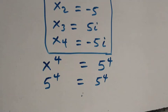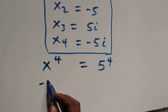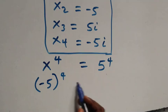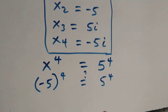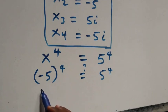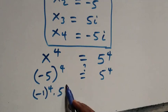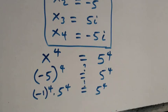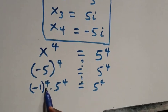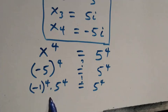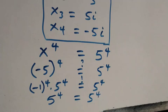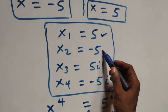Also for minus 5, when we substitute we have minus 5 raised to the power of 4 is equal to 5 raised to the power of 4. The power of 4 affects minus, so we have minus 1 raised to the power of 4, then times 5 raised to the power of 4, equal to 5 raised to the power of 4. When we raise minus 1 to the power of 4, it turns to plus, since minus 1 multiplied 4 times gives plus 1. So 5 raised to the power of 4 equals to 5 raised to the power of 4. The left hand side equals the right hand side, so x equals to minus 5 satisfies this problem.